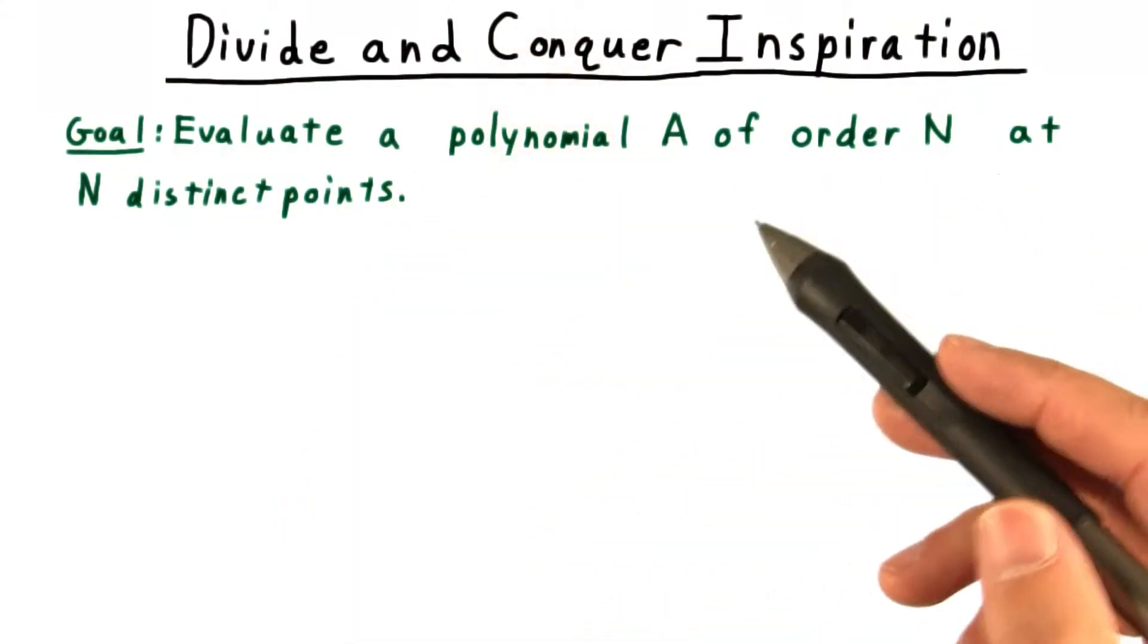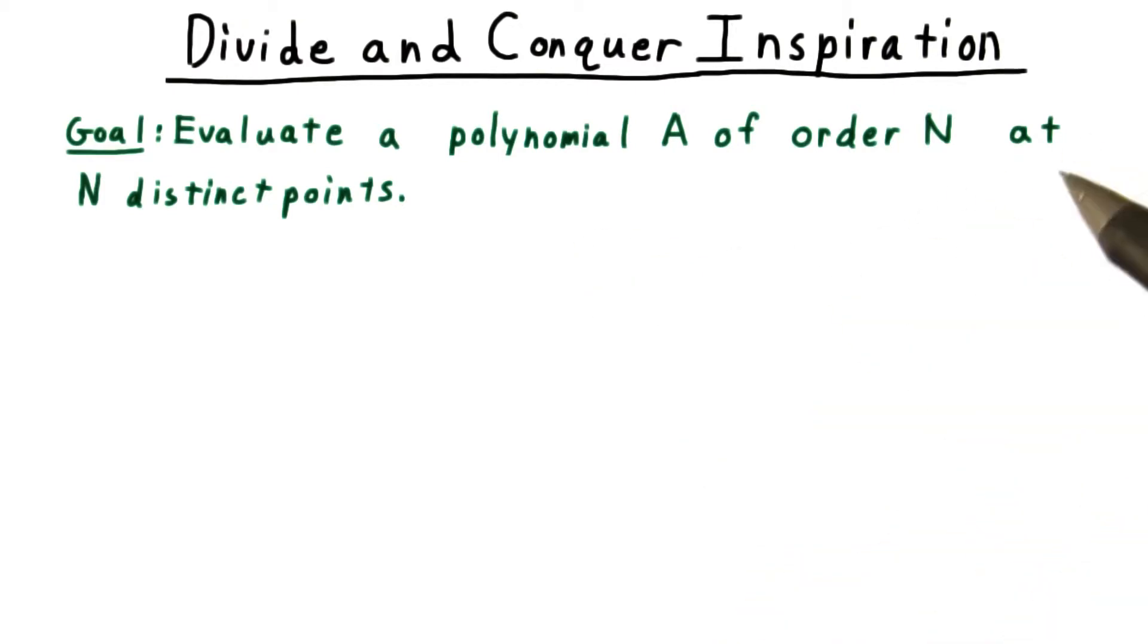To exploit the speed of multiplying in the value representation, therefore, we need an efficient way first to evaluate a polynomial at some distinct set of input points, and an efficient way to interpolate back the result to the coefficient representation. We'll focus on optimizing for quick evaluation of the polynomials first.